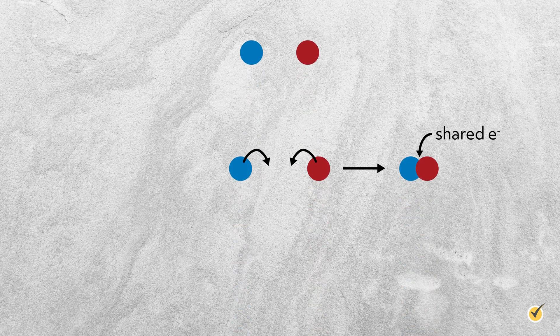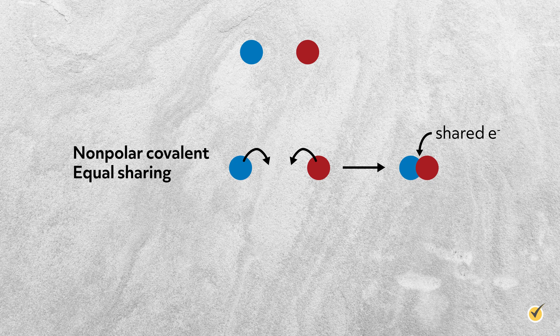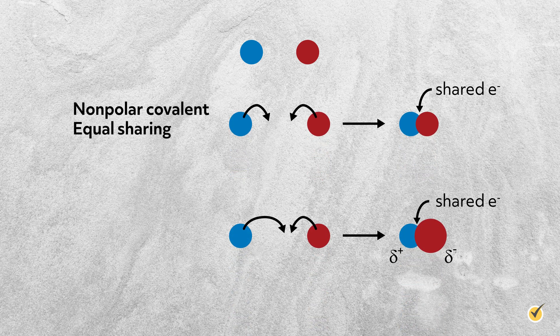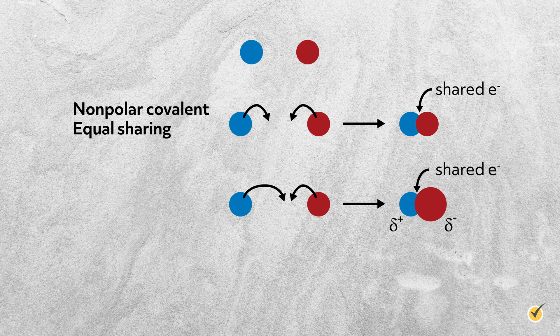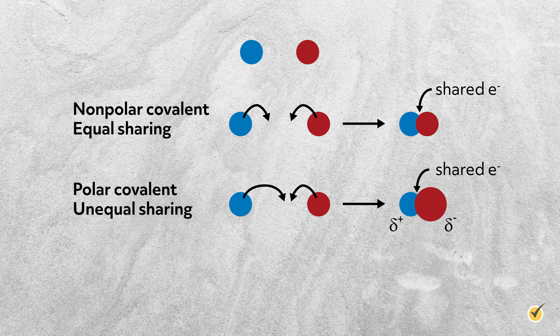Next, imagine two atoms that both donate electrons and share them equally to form a bond. This is a non-polar covalent bond, like in Cl2. Now imagine that one of those atoms has a stronger pull on the electrons than the other, and the electron density is then unequally shared. This is called a polar covalent bond, like in carbon monoxide, or CO.